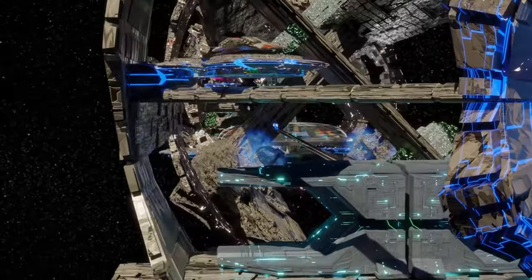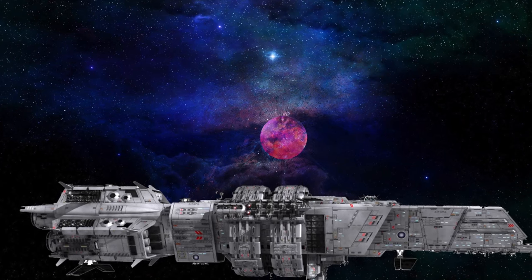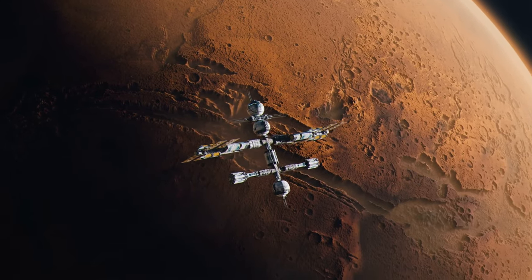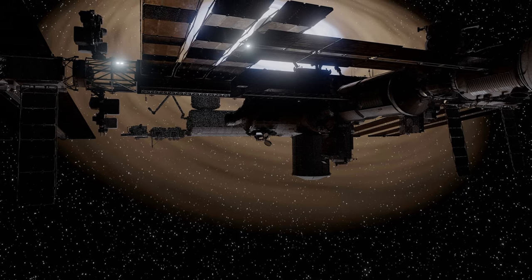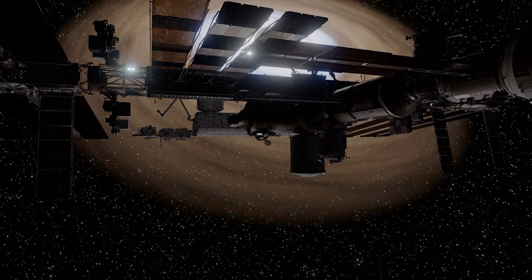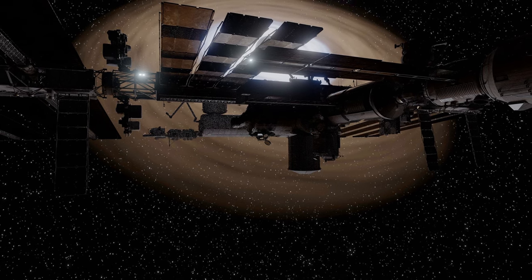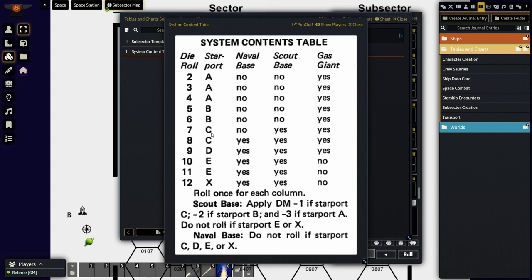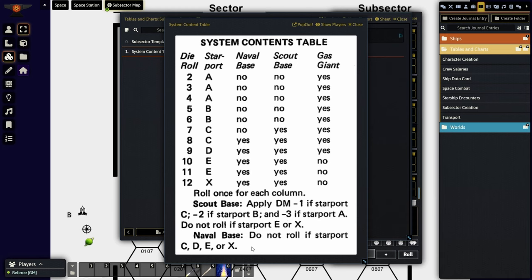Now, a B starport is very similar. It's just a little bit lower. It has almost the exact same features as a class A starport, really. It's when you get down to C here. Well, that's when we start getting it down to the kind of mediocre base. The starport here, it only has unrefined fuel. And the only reason why you would do that is if there's no gas giant in the system and you need some fuel. It has a mediocre repair facility. Scout base may be present, but no naval base is going to be present past a starport B. And it says this right down here. Do not roll if starport C, D, E, or X. They will not have a naval base. The Navy, they just want the best. So A or B, and that's it.